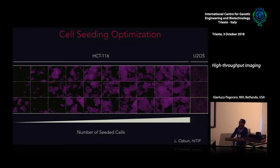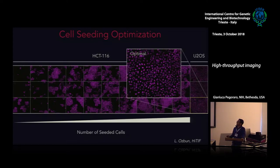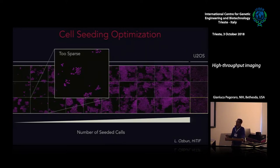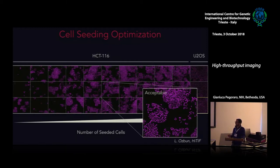One of the most important assay development parameters is optimizing cell density. This example shows a titration of cell numbers for a colorectal cancer cell line, HCT116, where we have an optimal cell density. Too sparse wastes time because the microscope acquires mostly empty fields of view. Too dense means cells are so packed that algorithms can't segment them. An acceptable density gives sufficient cells that the software can actually tell them apart.